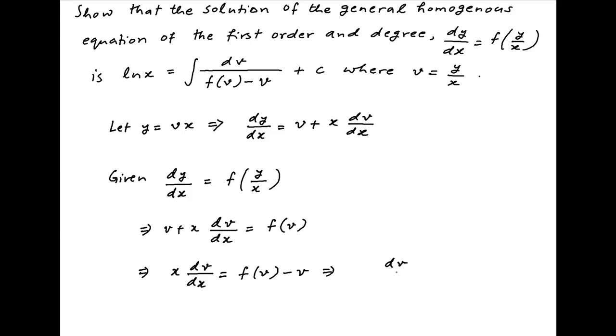Separating the variables we get dv upon f of v minus v is equal to dx upon x.